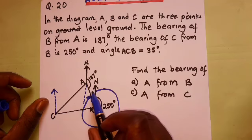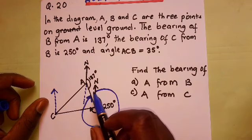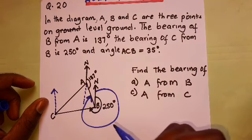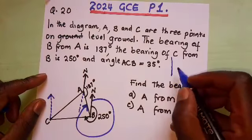You just subtract this angle from 360. But if you remember, there is a concept that says angles on the same side of the transversal add up to 180.